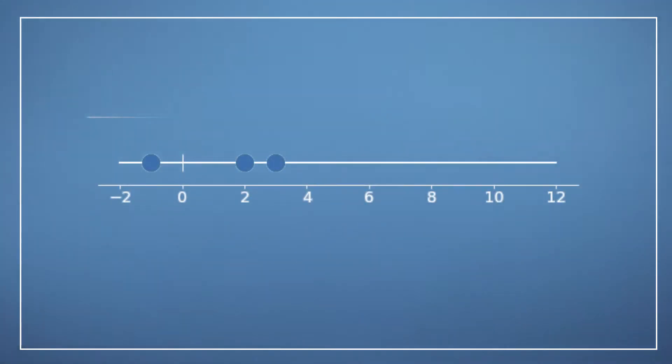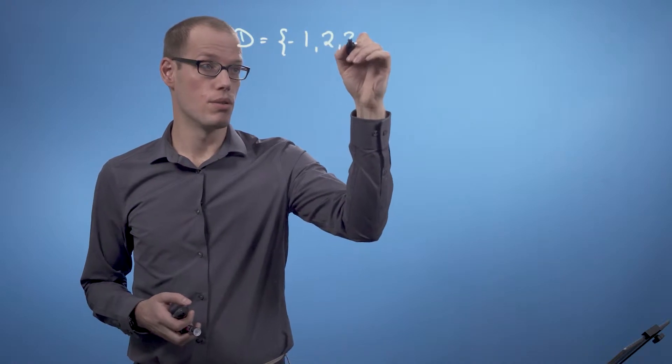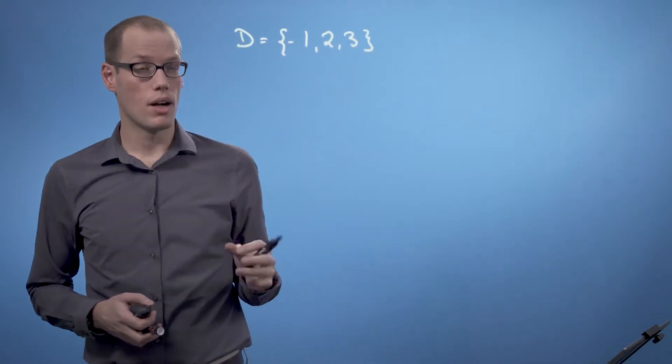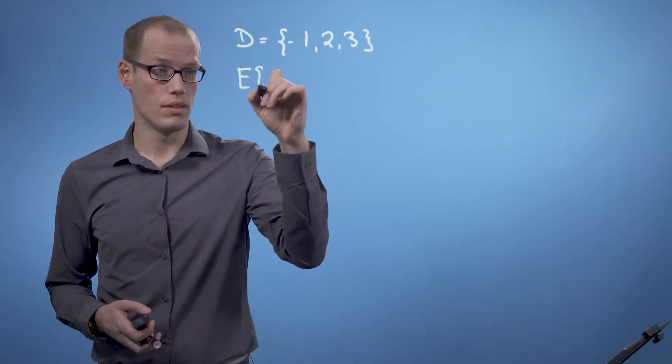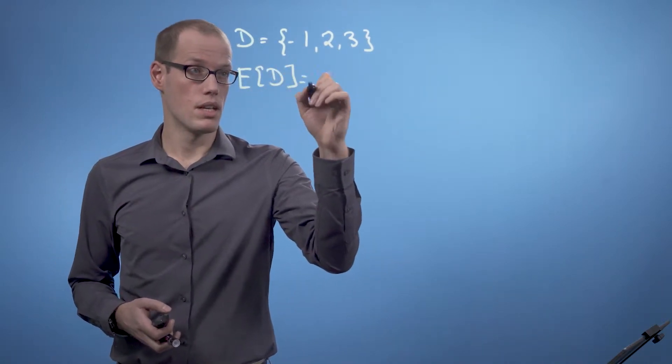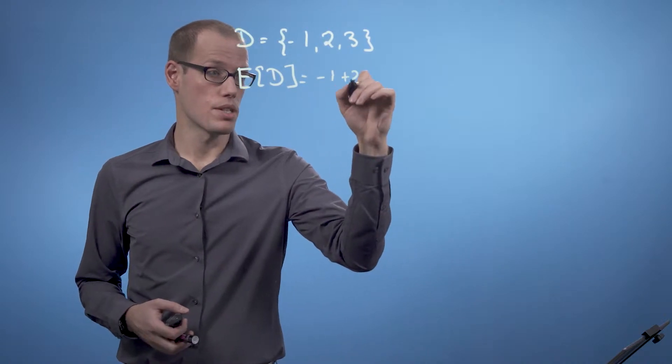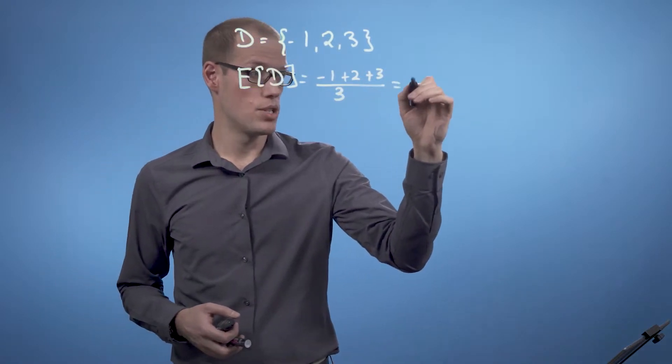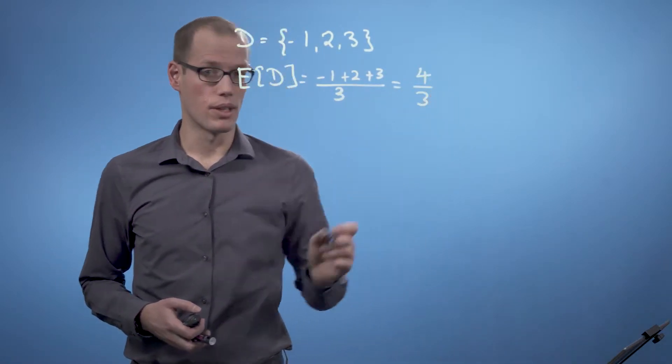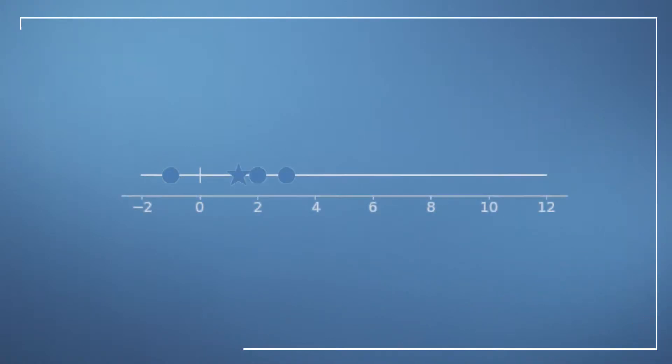Let's look at a data set D which is given by these blue dots over here. We have a data set D which is minus 1, 2, and 3. Now let's compute the mean value of this data set to start with. The expected value of D is minus 1 plus 2 plus 3 divided by 3 which is 4 over 3. I'm indicating the mean value of this data set by this blue star.